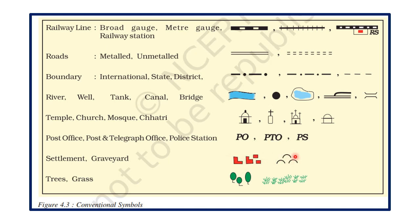These types of symbols are used on the map to show graveyard. Different shapes of trees represent different types of forests found in the area, and grasses. These are some of the conventional symbols used on a map to read and understand it.